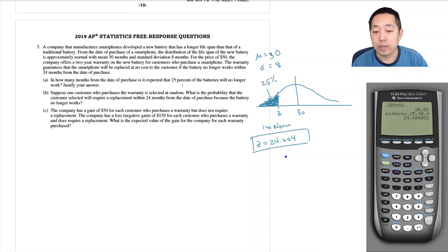Less than about 24.604 months, so it's pretty close to two years—this is very close to the two years. Suppose one customer who purchases a warranty is selected at random. What is the probability that the customer selected will require replacement within 24 months from the date of purchase?